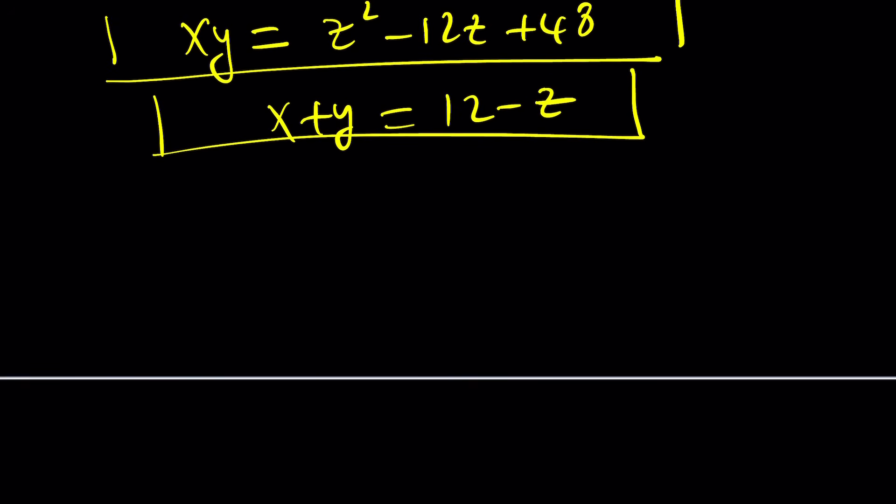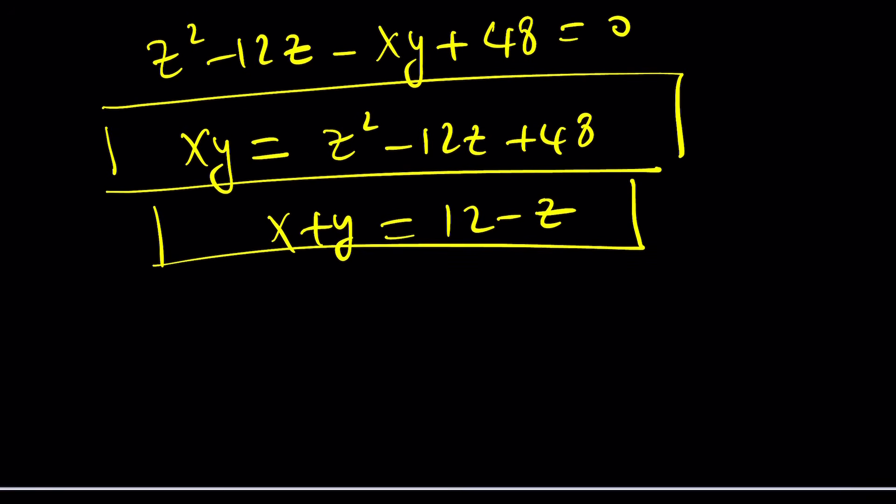Because I know the sum and the product of two roots, and the roots will be x and y. But let's just use another variable to represent x and y. Let's use t. t squared minus the product. I mean the sum, sorry about that, times t, plus the product, z squared minus 12z plus 48. Now I want this equation to have real solutions. So its discriminant needs to be greater than or equal to zero.